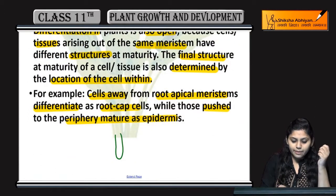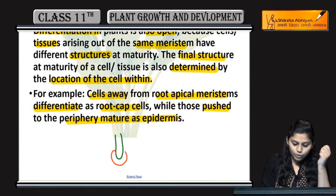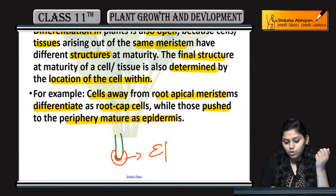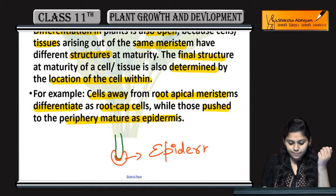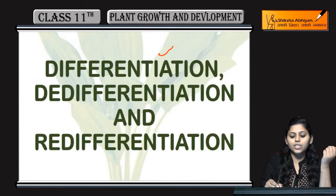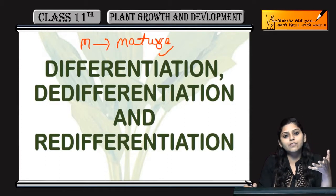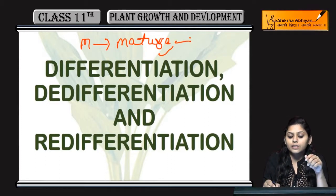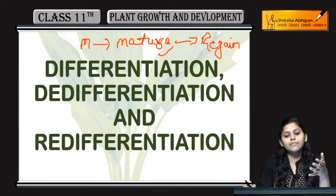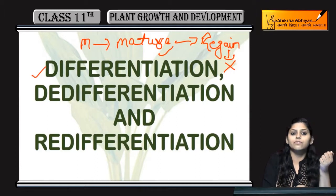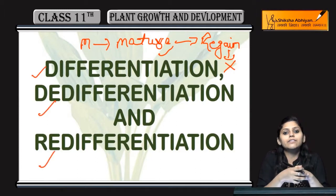Around the root apical meristem, the root cap is produced and pushed toward the periphery, maturing as epidermis. In summary: in differentiation, meristematic cells mature and are assigned a proper function. In de-differentiation, mature cells regain the capacity to divide. In re-differentiation, cells lose the capacity to divide once again. This was all about differentiation, de-differentiation, and re-differentiation.